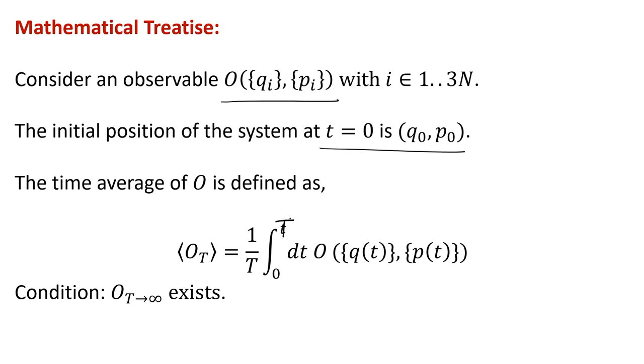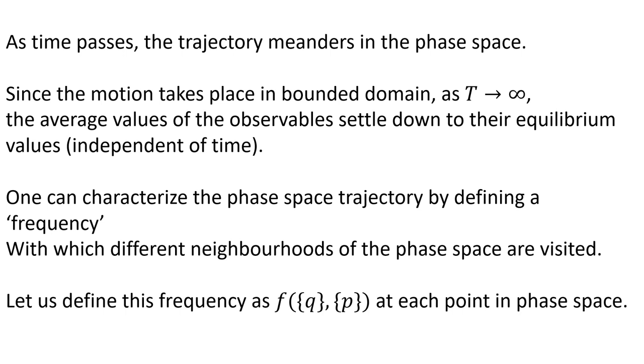Please note that the upper limit should be capital T. The condition is that this observable as capital T goes to infinity exists, and it is not a severe restriction. In a bounded domain this always exists. As time passes, the trajectory of the particle meanders in phase space, going from one place to another in a bounded q-p space. The system is going to come back and visit various parts of the phase space — that is called a bounded domain.